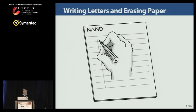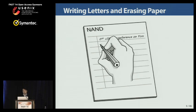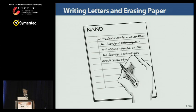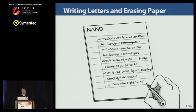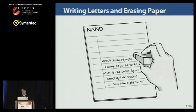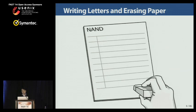FlashMan is ready to write letters on paper. He writes some letters. As time goes on, he fills all over the paper. Eventually, free space is exhausted. So, for writing a summary of this talk, he should erase the paper with an eraser. FlashMan works hard, and the paper is successfully erased. These are the basic NAND operations.